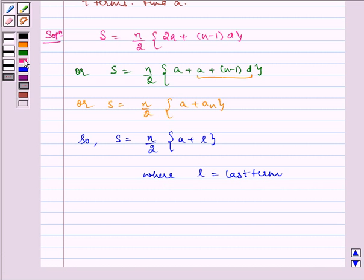Now, substituting the values of S, N, and L in this, we get it implies 144 is equal to 9 by 2 multiplied by A plus 28.